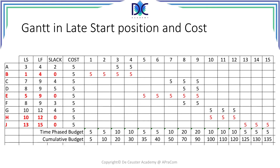The next thing to do is to calculate the planned start Gantt chart, and here we have to be a little careful. Remember what happened with activity A — I extended it from 2 to 4 periods. When we extend the activity, the total cost of the activity doesn't change. The total cost of activity A is 10K.